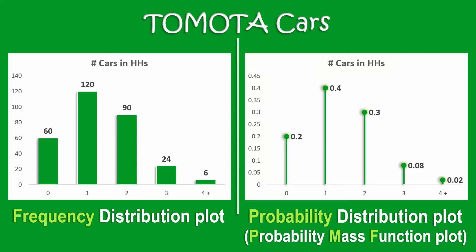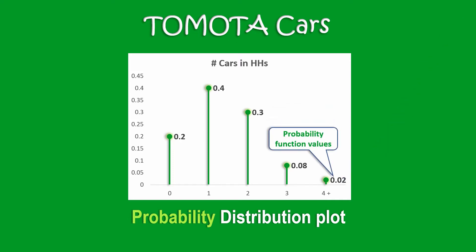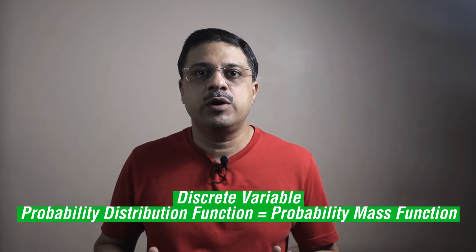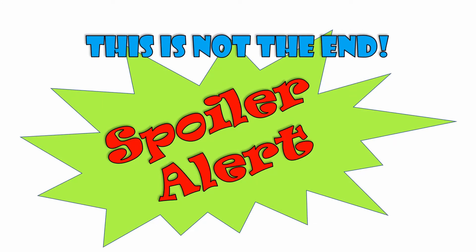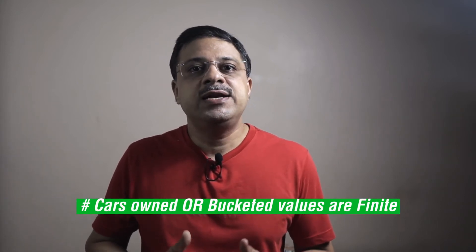Notice how different they both look. Here's an important tip: to plot a discrete probability distribution you need to identify, first, an event; second, the possible values that the event can take; and third, the function that determines the relative probability that the discrete random variable is exactly equal to some value. For example, the probability of owning over four cars is 0.02 or 2%. This function is also called the probability mass function. Note: the probability distribution function for a discrete variable is the same as a probability mass function.